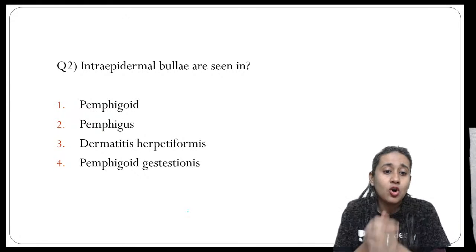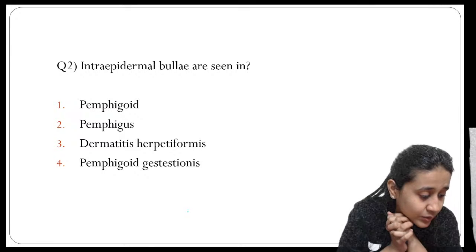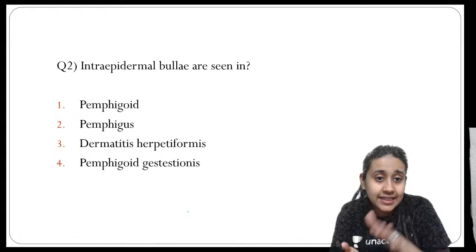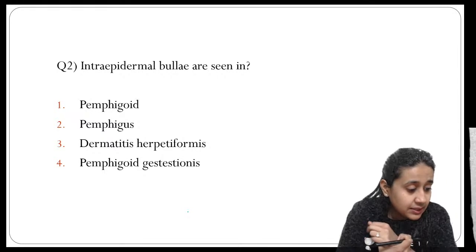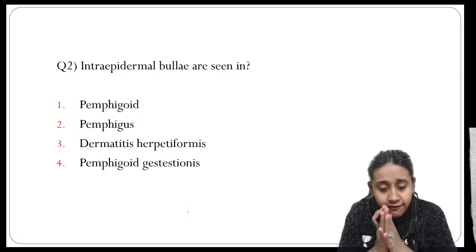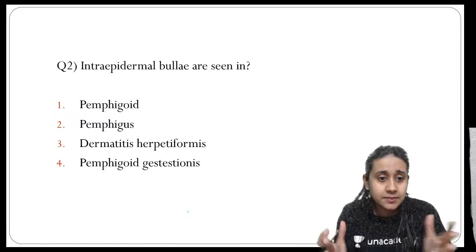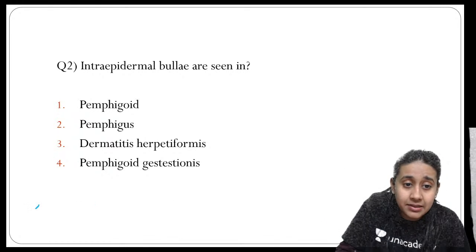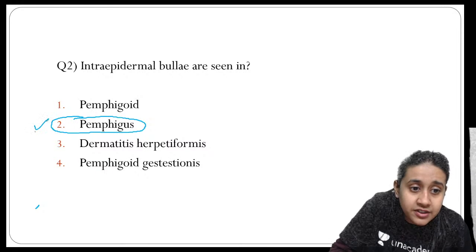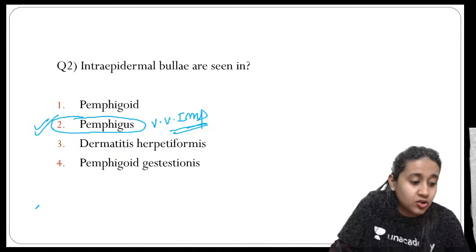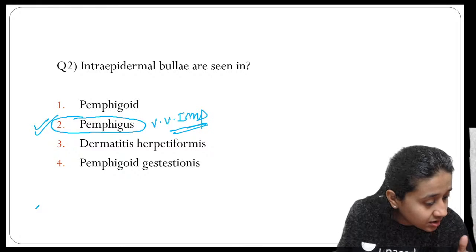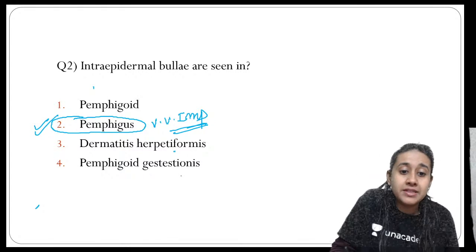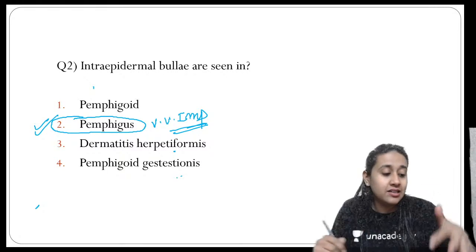Next question: which of the following is an intraepidermal bulla — pemphigoid, pemphigus, dermatitis herpetiformis, or pemphigoid gestationis? The only intraepidermal acantholytic disorder among those options is the pemphigus group of disorders. Pemphigoid, dermatitis herpetiformis, and pemphigoid gestationis all produce subepidermal bullae.